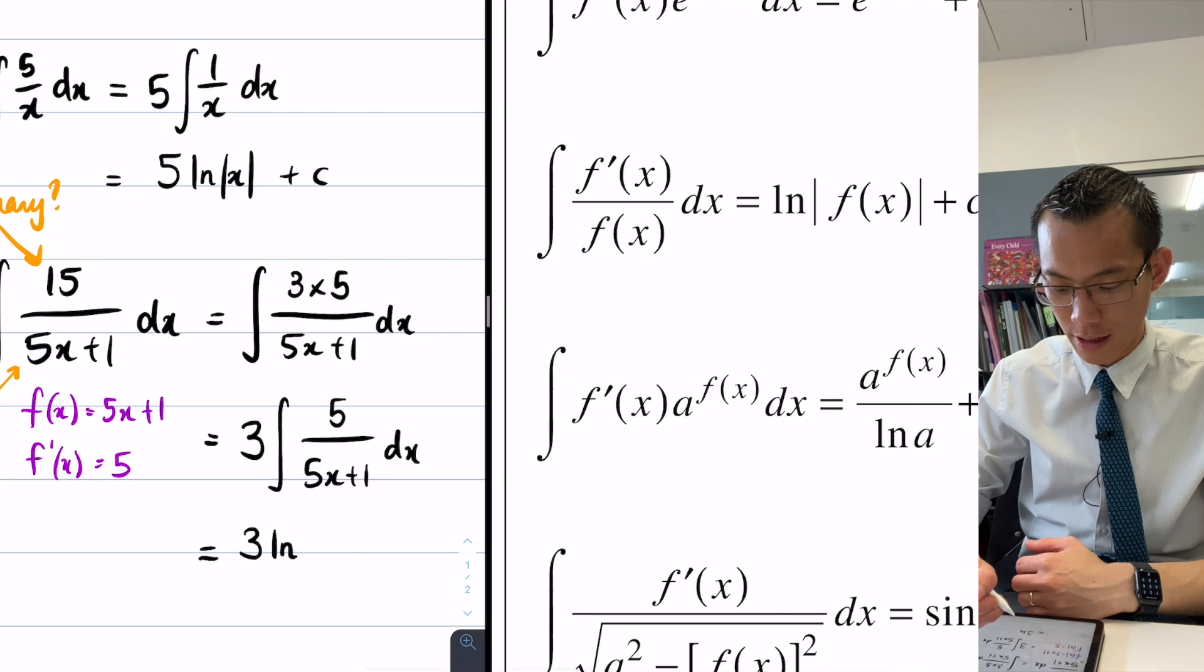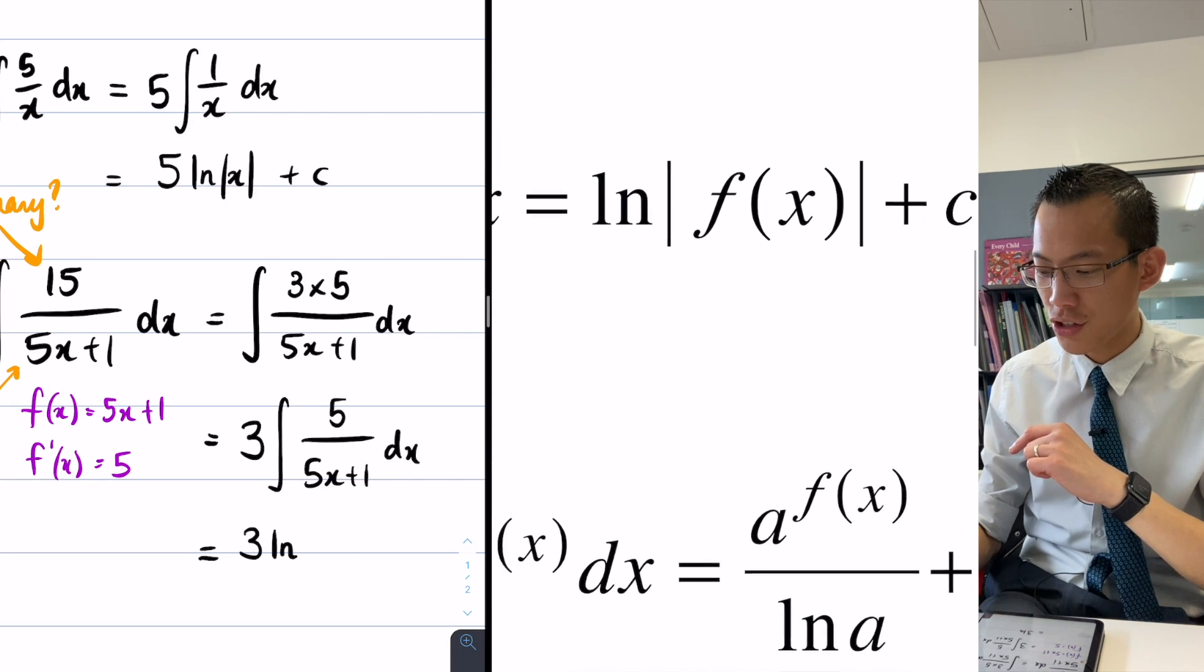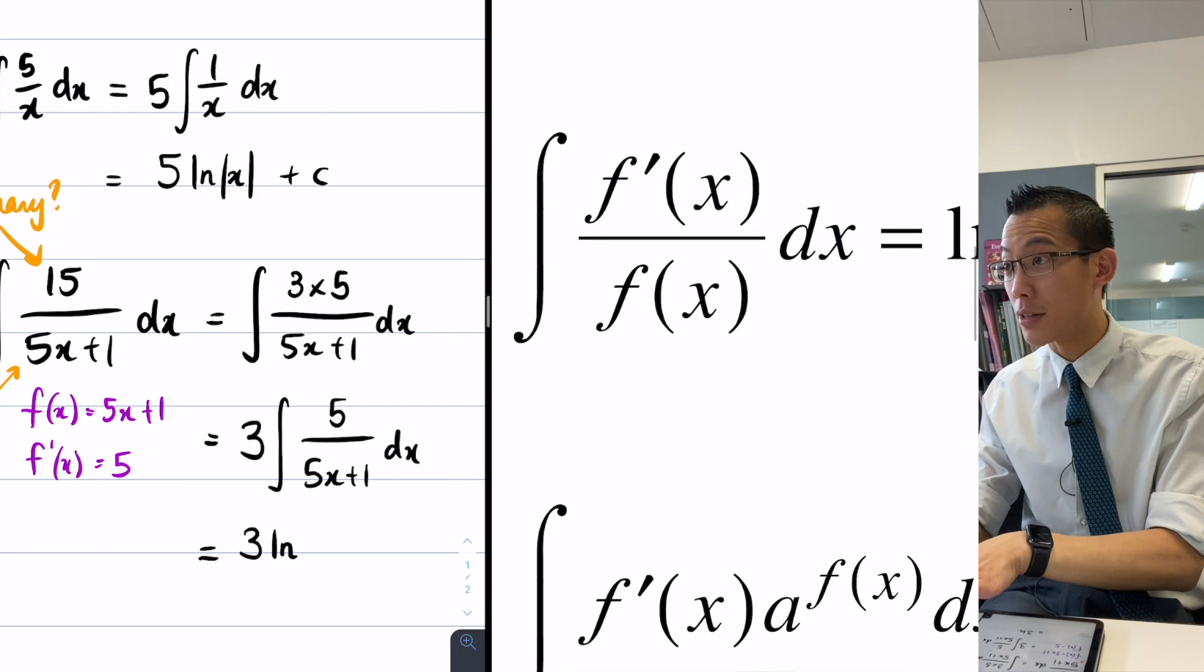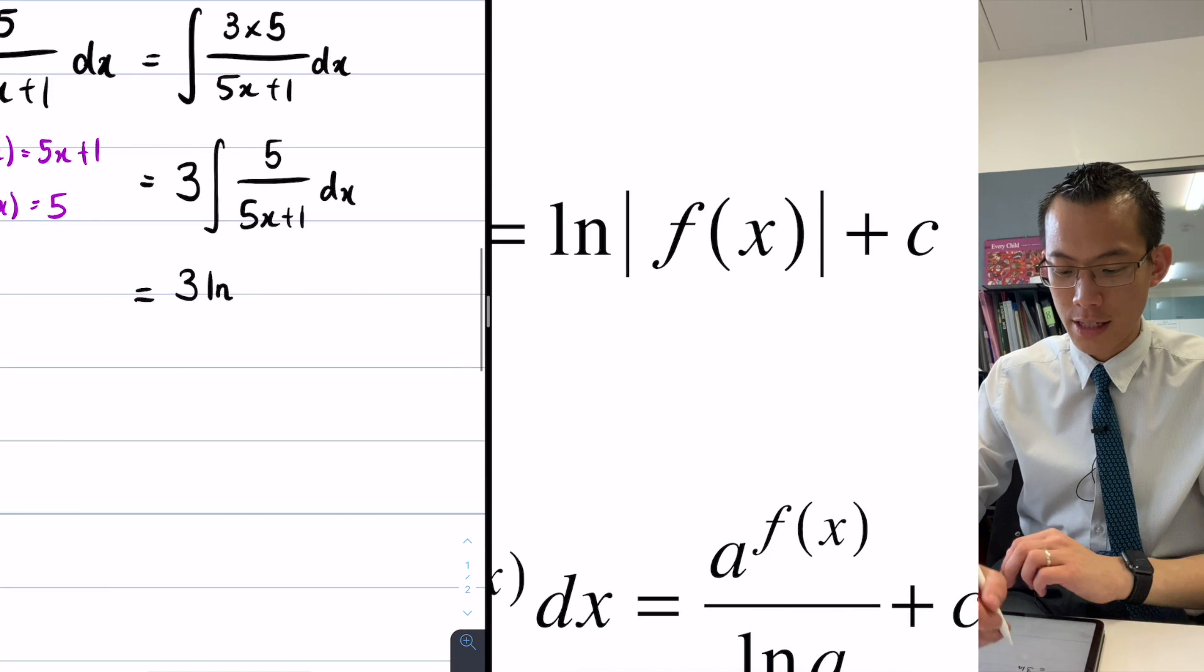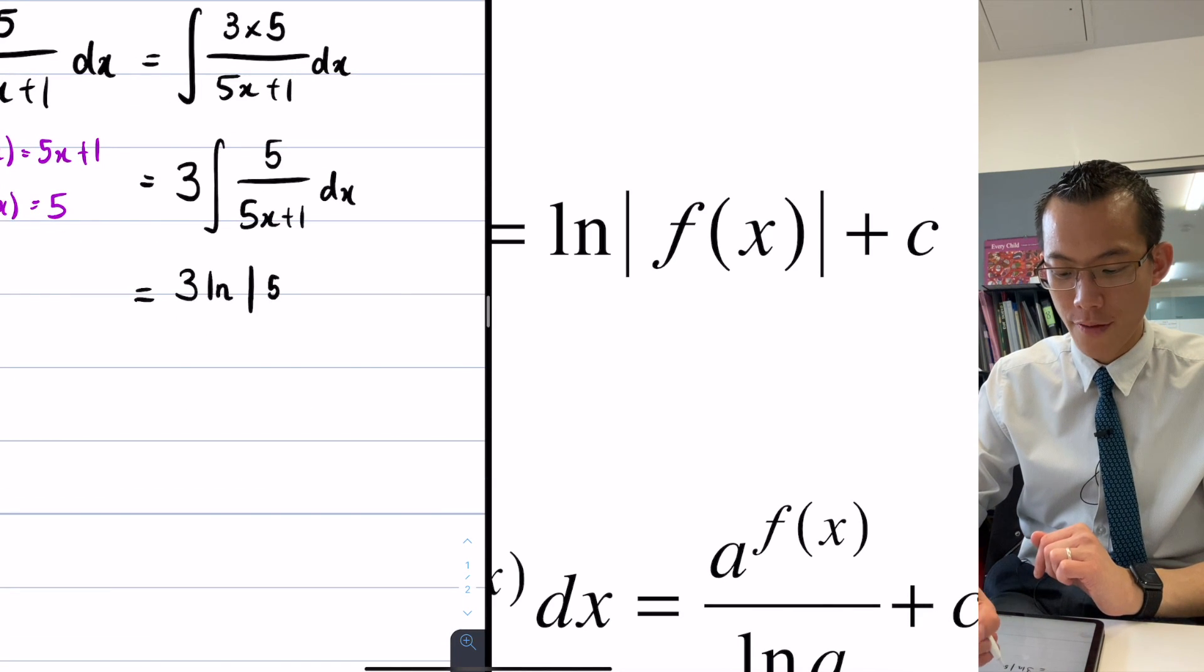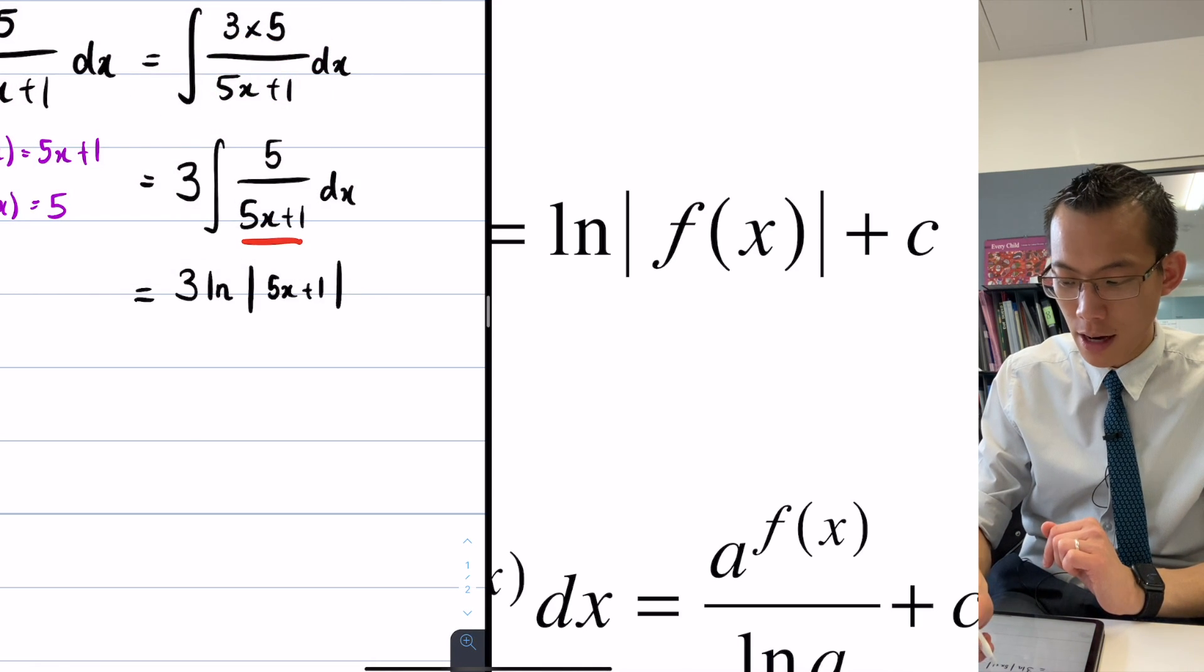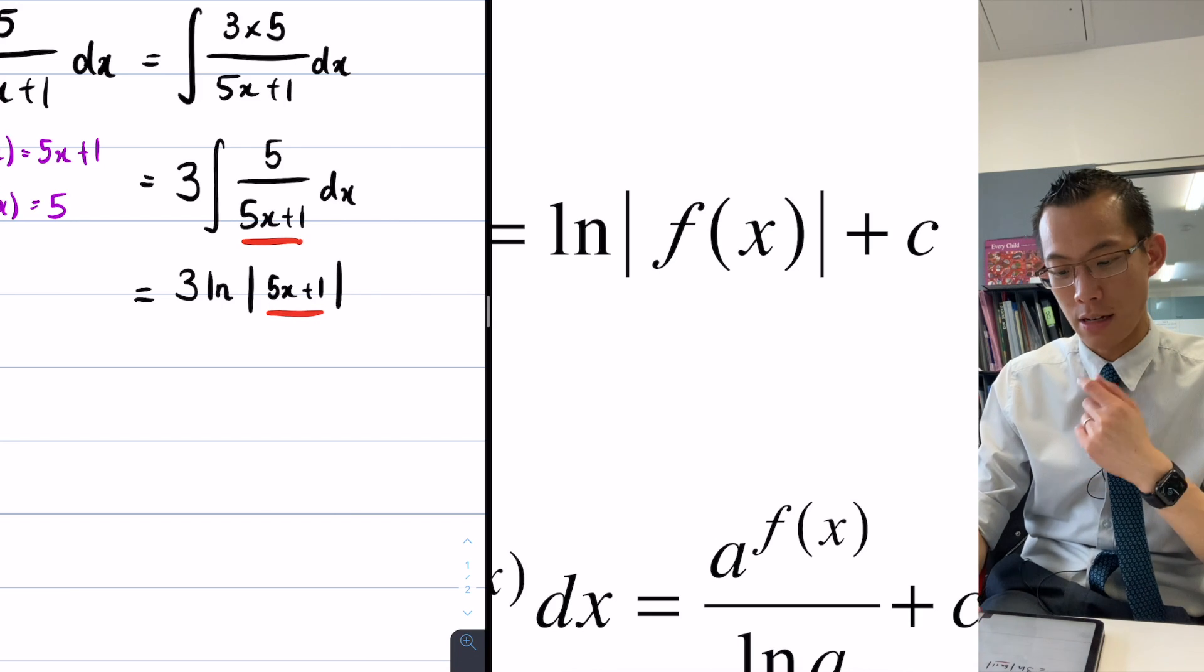Yeah, three ln. Now, hold on a second. It's three ln, and you can even see over here, it's actually log of whatever that function is, that f of x, that denominator is. Right. Do you see that? So it's log of whatever function, which in this case is five x plus one. Do you see that? Oh, the whole thing. Yeah, it's the whole thing. So this whole piece here is the f of x, right? So that's why the whole thing ends up underneath.